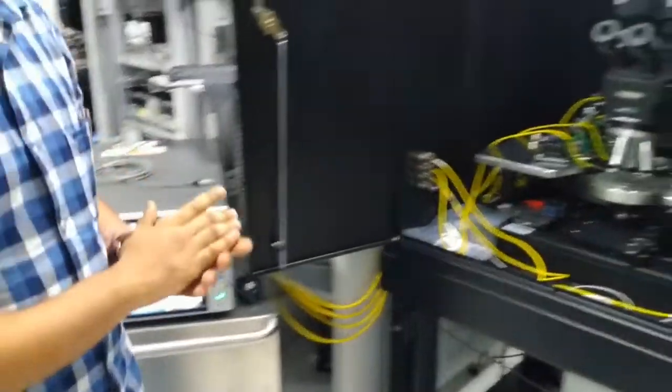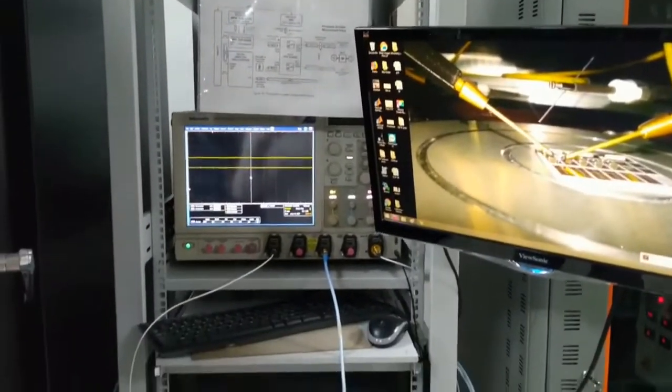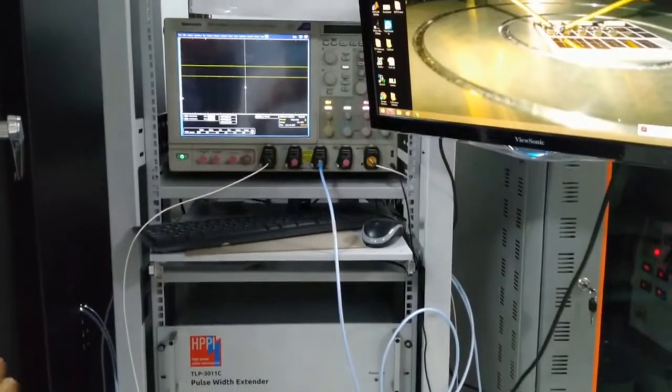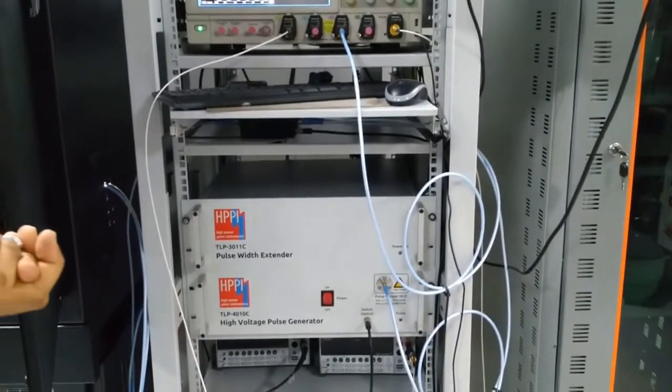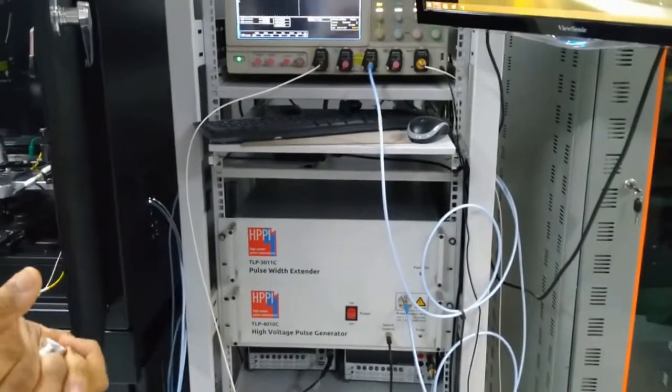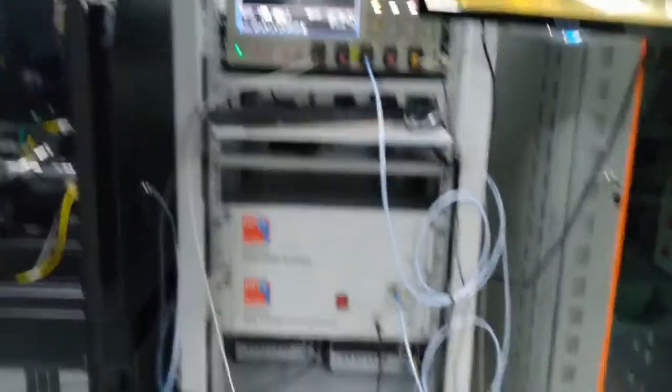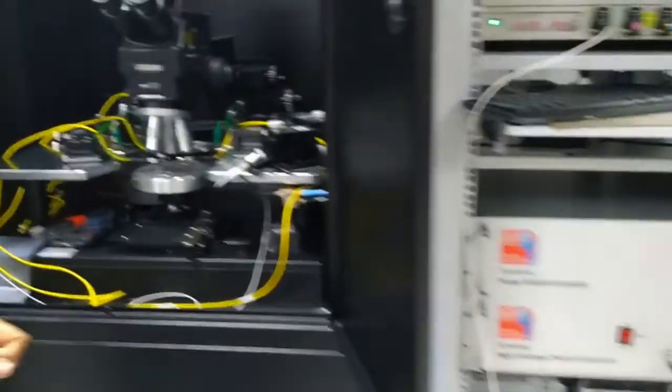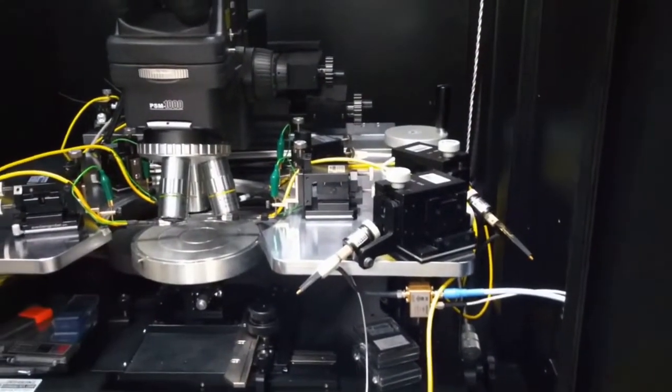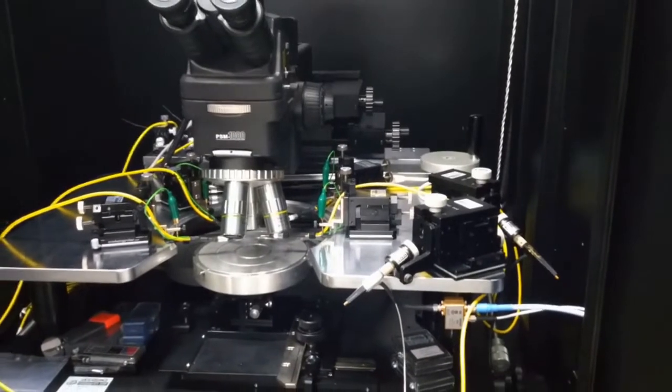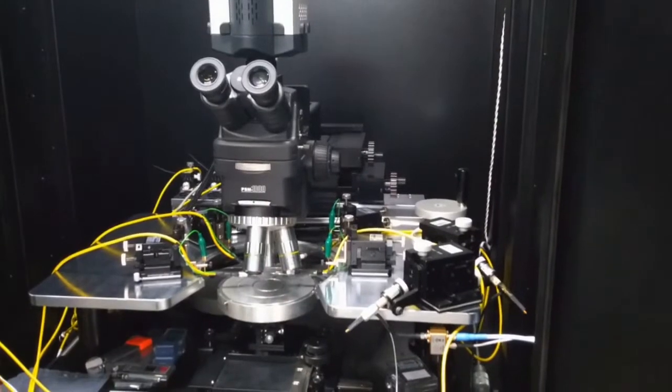In addition to these SMUs, we have a nanosecond pulse generator called the transmission line pulsing unit which generates pulses as high as 2 kilo volts with pulse widths as low as a few tens of nanoseconds to 1.5 microseconds. These pulses once generated are transferred to the device through transmission lines which are supplied to the device using very specialized RF probes which help us carry out electrostatic discharge measurements and probe physics of devices under ultra-short time scales.